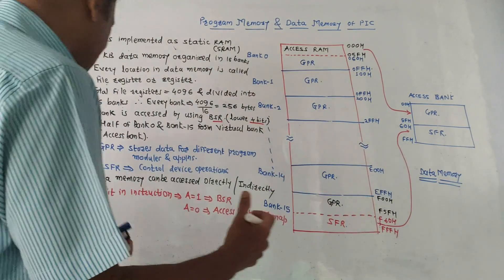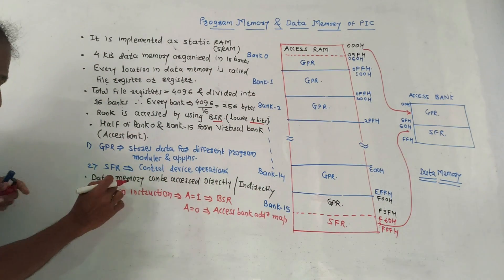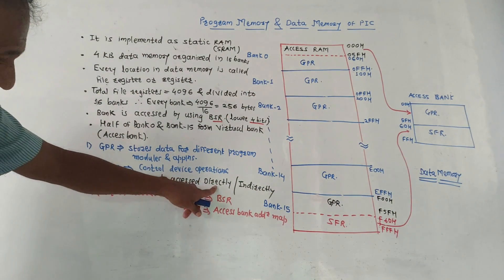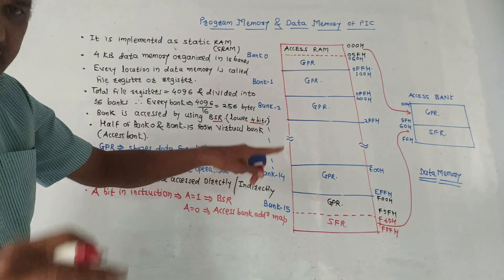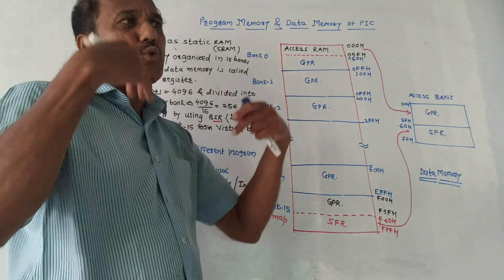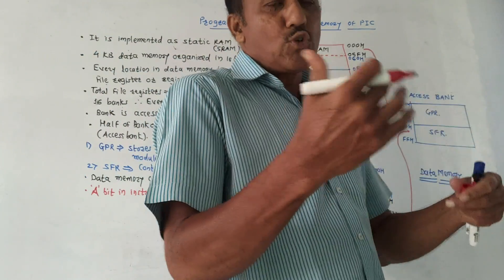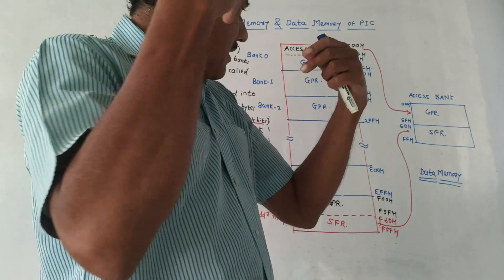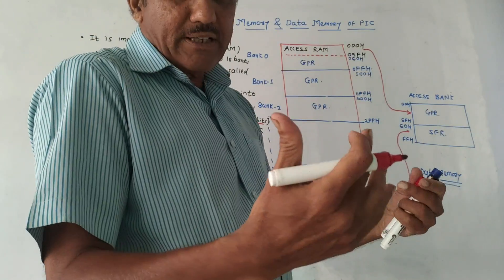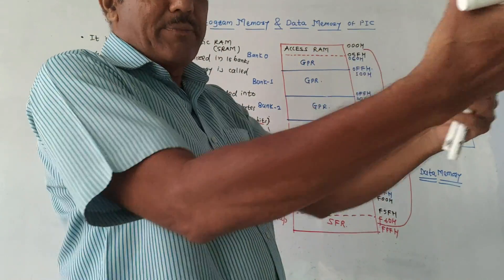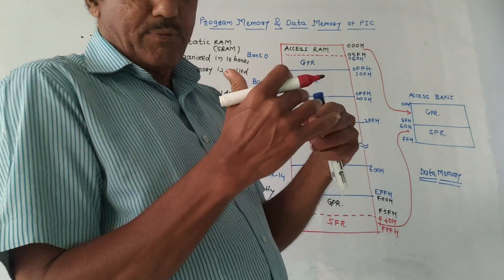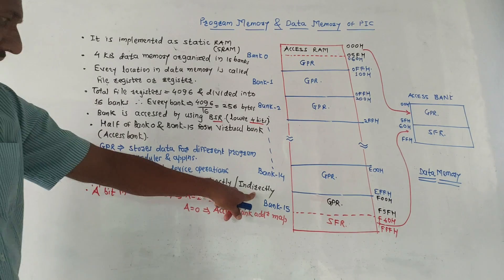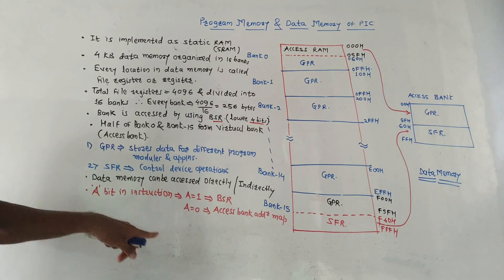The second type is Special Function Registers (SFR), used for controlling operations related to peripheral devices. Data memory can be accessed using two methods: direct method or indirect method, through which data can be transferred to or read from the data memory.